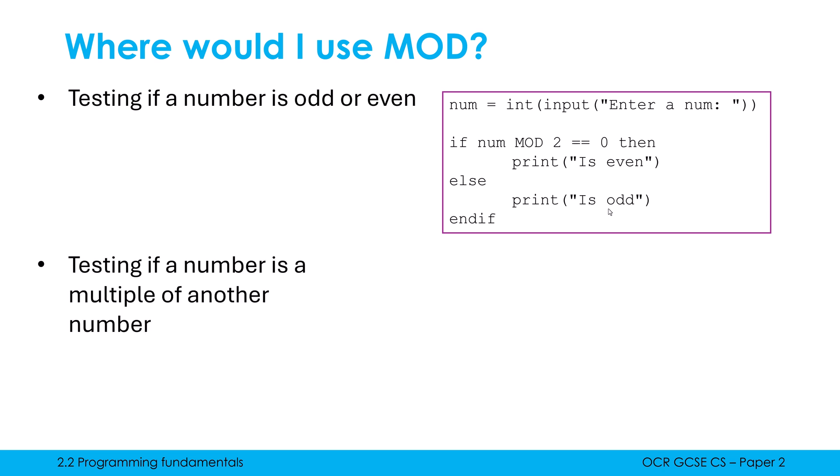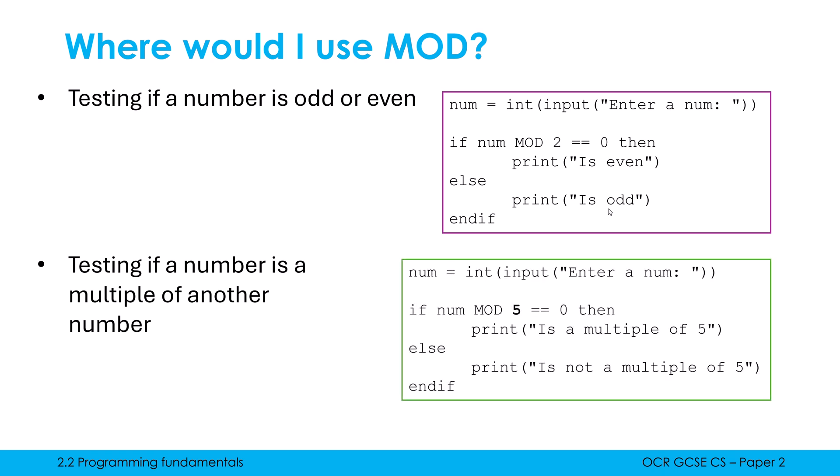And really, we can generalize that. So if I was, generally speaking, testing if a number is a multiple of another number, it would be very similar code. This code here is checking to see if a number is a multiple of 5. I'm doing the number MOD 5. If it's a clean division, if I've got no remainder, it must be a multiple. So for example, 25 is a multiple of 5, whereas 27 is not a multiple of 5 because it would give us a remainder of 2.